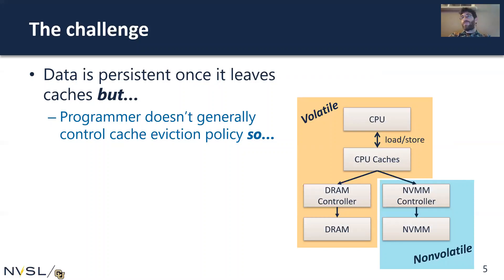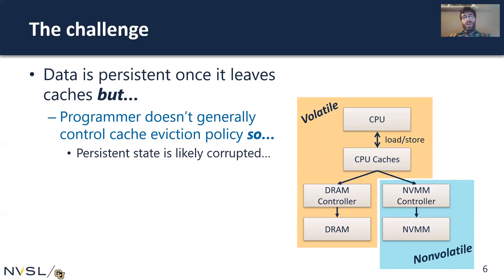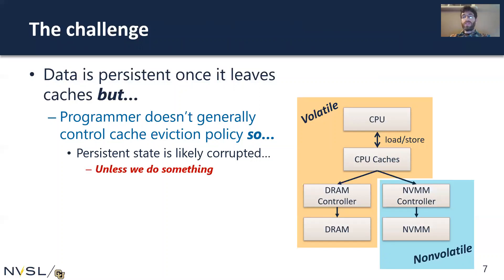If the programmer has a bunch of modifications expected to become persistent, the cache eviction policy might reorder those writes such that what actually resides in persistent memory is incomplete. At a crash, it's very likely for persistent state to be corrupted because some updates are missing. So we need some sort of system that allows us to consistently update our persistent state.